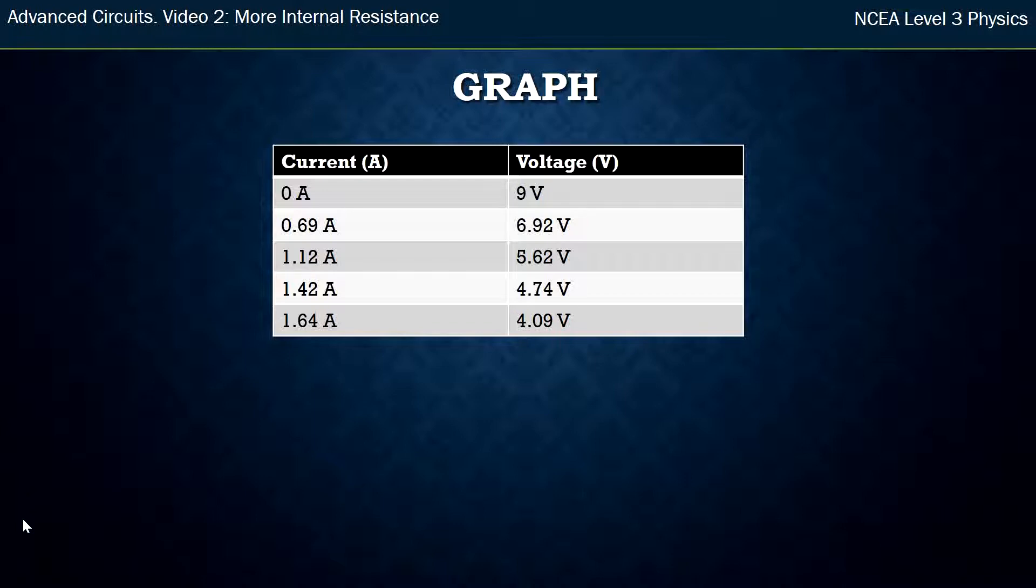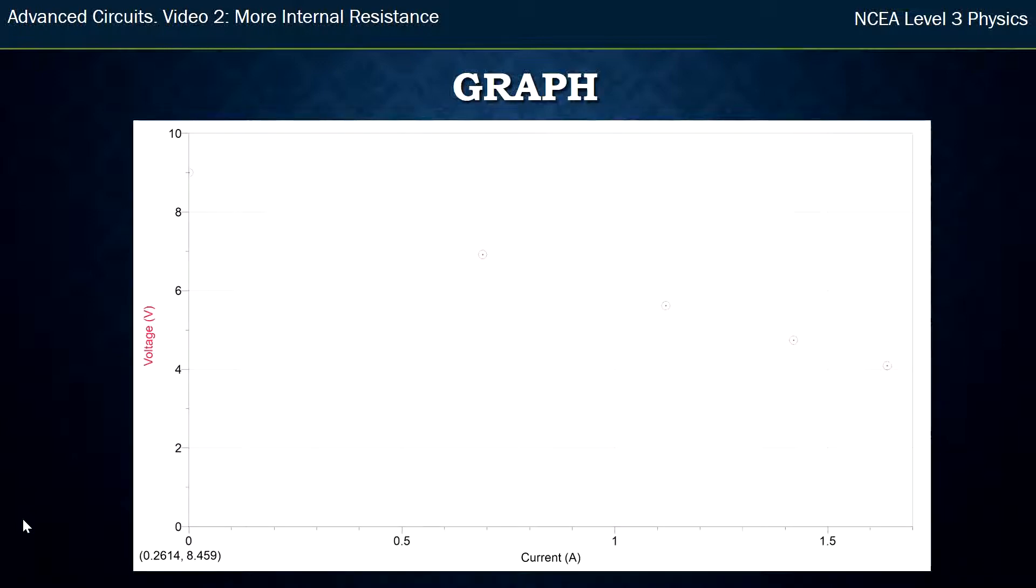So here's my data: 0 amps open circuit, 9 volts—that's my EMF—and I've got all of these values here. It would make sense to graph them, and you can see on this graph that the red dots there look to be a straight line. So I'm going to add a line of best fit, and it is a straight line.